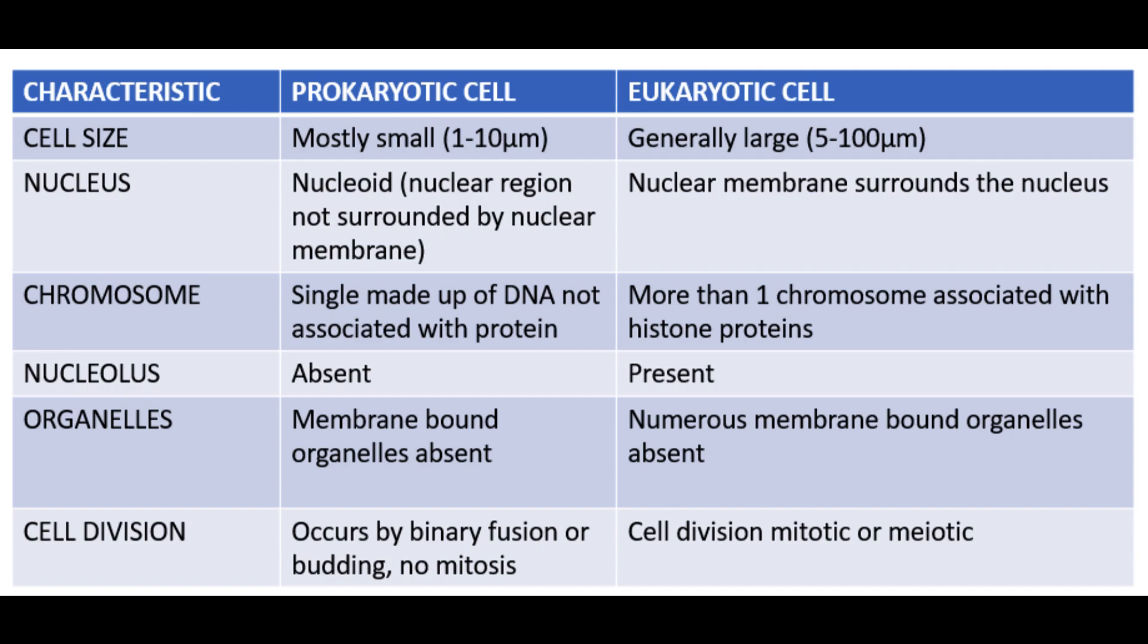Let us now see the difference between prokaryotic and eukaryotic cells. We have identified six major differences starting with the cell size, where the prokaryotic cell is very small compared to the eukaryotic cells which are much larger. The nucleus in prokaryotic cell is in the form of the nucleoid without a clear nuclear membrane, whereas in eukaryotic cell the nucleus is surrounded by nuclear membrane. In prokaryotic cell there is only one single chromosome made up of DNA and it is not associated with any proteins, whereas in eukaryotic cell there could be more than one chromosome and they are associated with histone proteins.